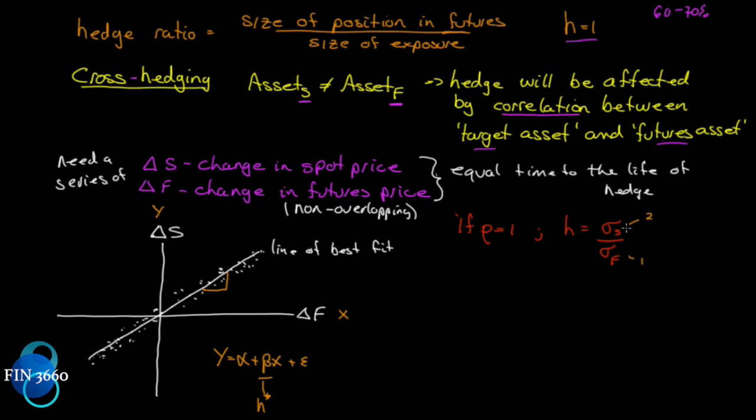So we can see that h is the ratio of the standard deviation of the spot price to the standard deviation of the futures price. However, when we cross-hedge, it's affected by the correlation between the two, so we have to adjust this formula for cross-hedging to reflect the fact that the correlation will affect this ratio.